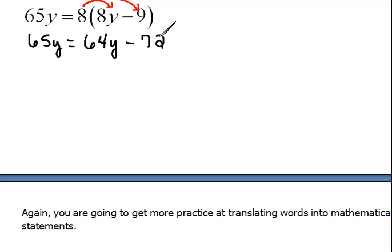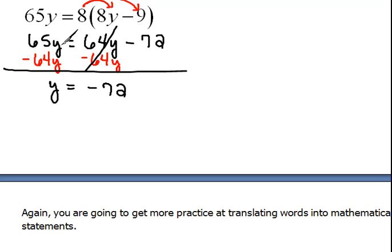Now I've got y's on both sides, so I'm going to remove this 64y by doing the opposite. 64y minus 64y would cancel that out. So 65y minus 64y is y on the left hand side, and on the right hand side we're left with negative 72.